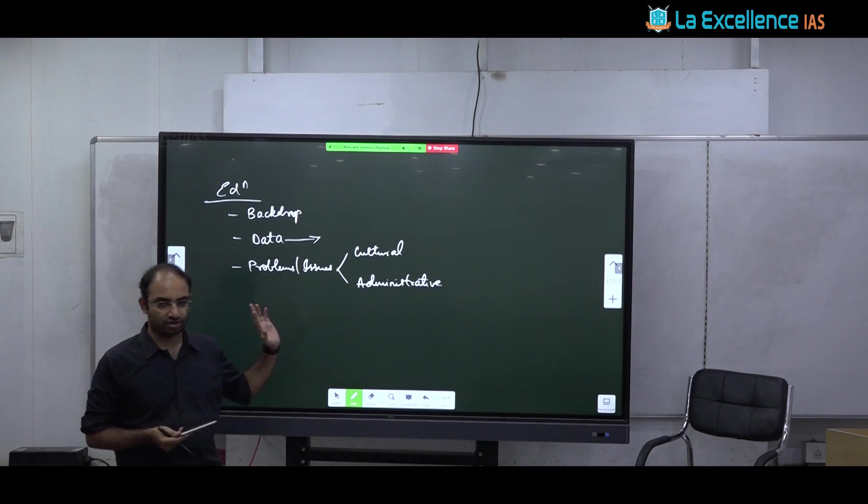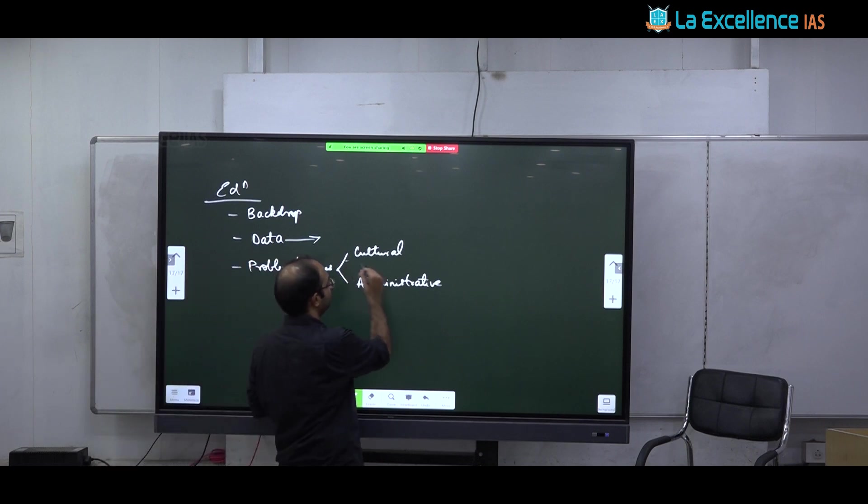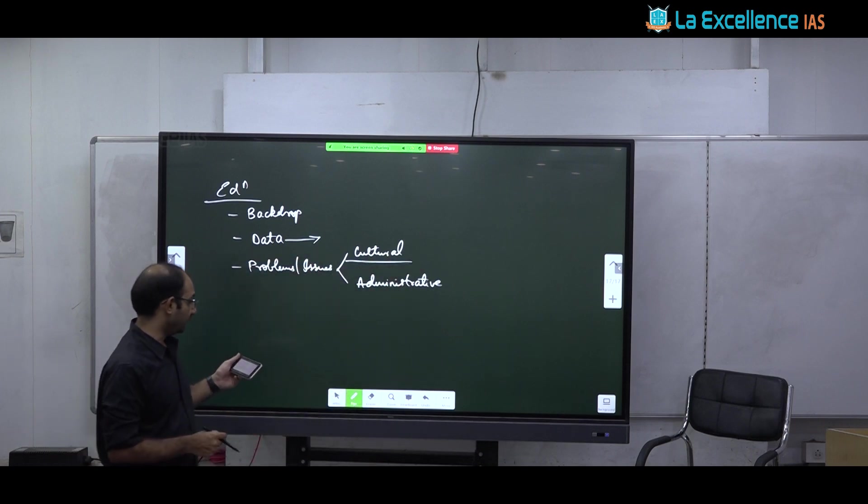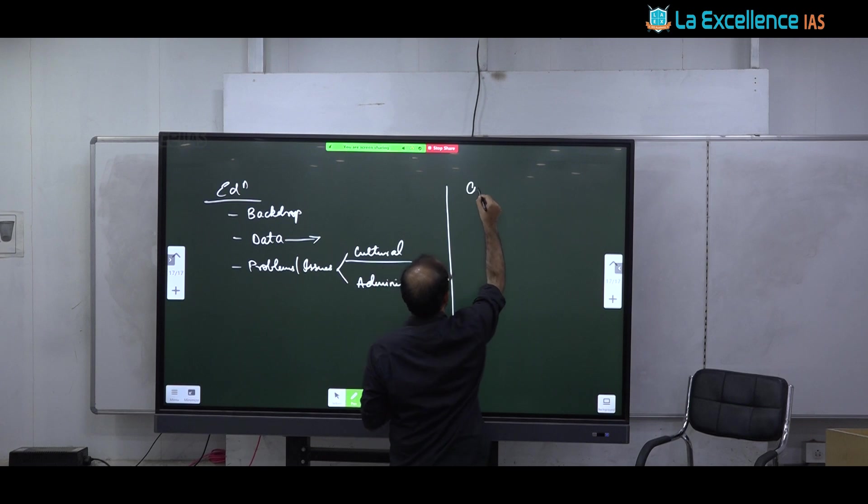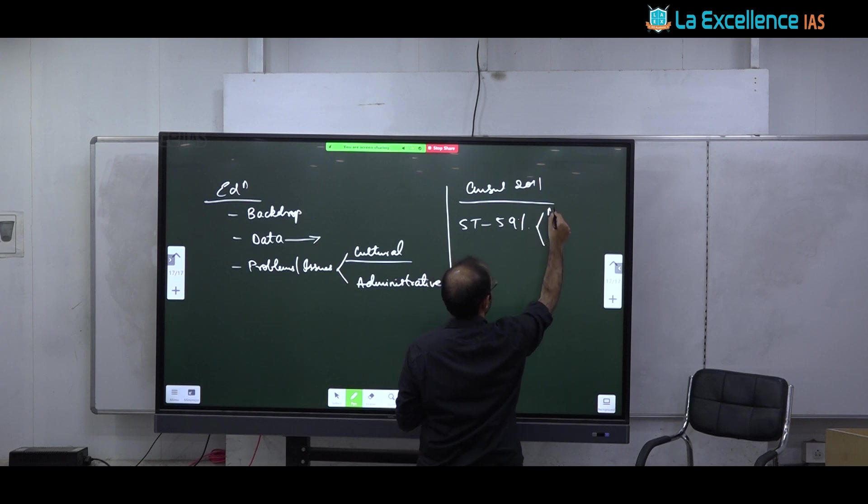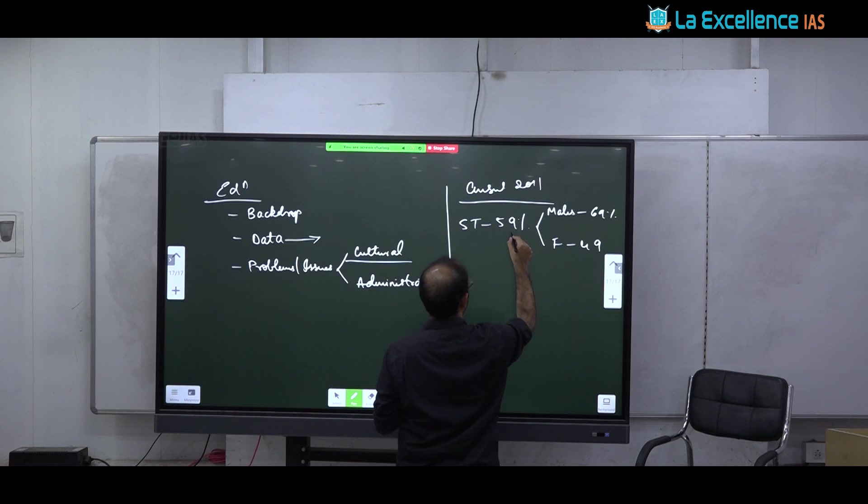To promote education in mother tongue they have introduced something called as mirror image textbooks. Mirror image textbooks here on one side you will have for example Telugu. On one side there will be tribal language in Telugu script. On another side you will have Telugu language in Telugu script. Let us say Savaras. For example, Savara language is written in Telugu script on one side. On another side you will have Telugu script and Telugu language.